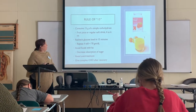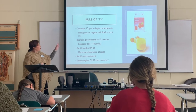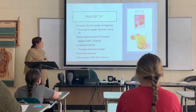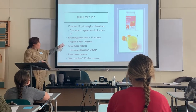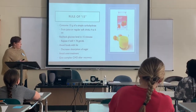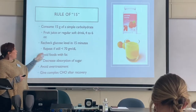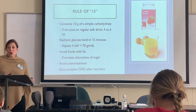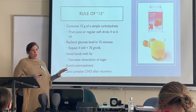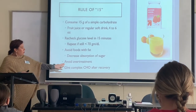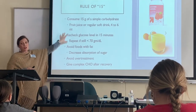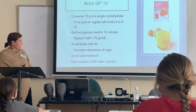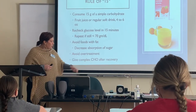So how do we treat our patient? The Rule of 15: we want them to consume 15 grams of a simple carbohydrate — this can be orange juice or a regular soft drink, at least 4 to 6 ounces. Then we recheck their glucose level in 15 minutes. If it's still less than 70, we repeat this — more orange juice, soft drink, peanut butter and crackers. We want to avoid over-treatment, because loading too much will cause their sugar to rebound sky high. After they recover, we give them a complex carbohydrate.